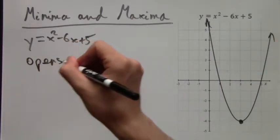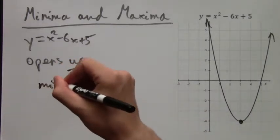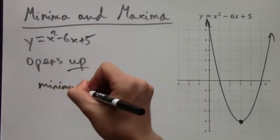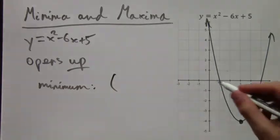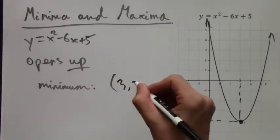And because it opens up, its vertex is a minimum. It's the lowest point on the parabola. And this point is (3, negative 4).